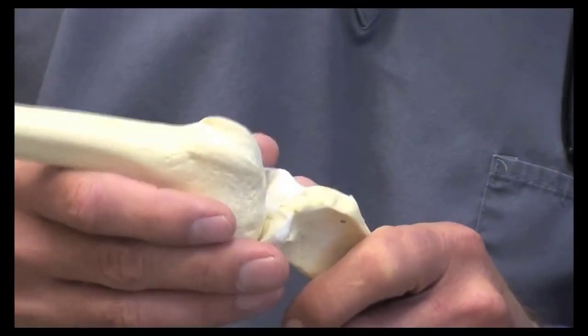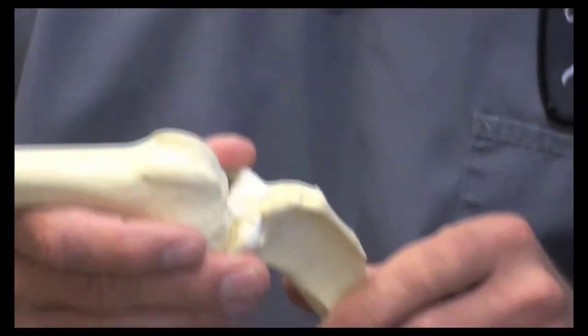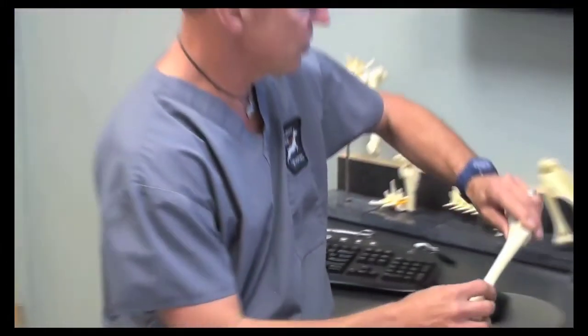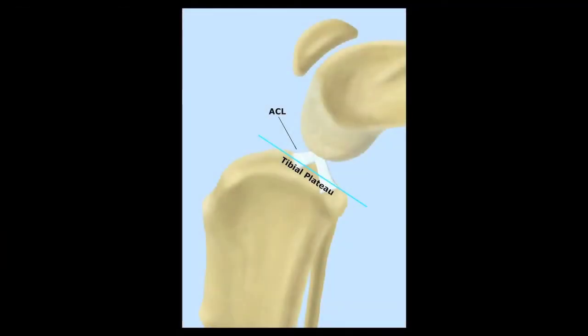I have one more anatomic illustration on the computer screen here. In this illustration, once again, we see the tibia below the joint, the femur above the joint, and the tibial plateau is the sloping line shown in the illustration. The ACL is labeled, and the PCL is shown as well — that represents the posterior cruciate ligament, or PCL.